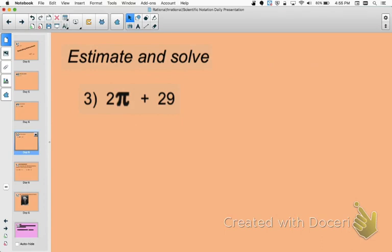Okay, ladies and gentlemen, we are now looking at our last example. This time we've got 2 times pi plus 29. Okay, luckily we've worked with pi before, and we know that our estimated value of pi is 3.14. So I'm going to rewrite this as 2 times 3.14 plus 29.